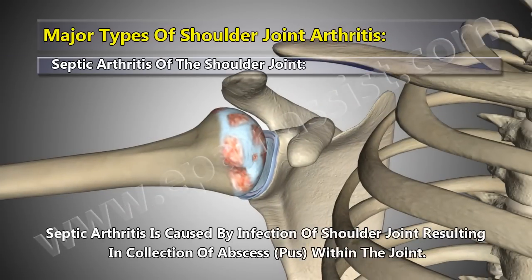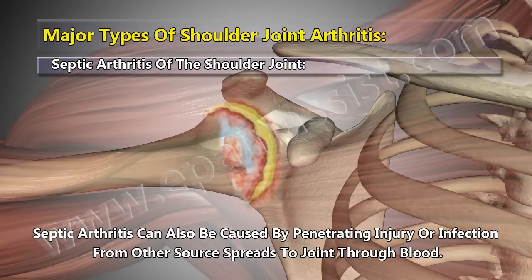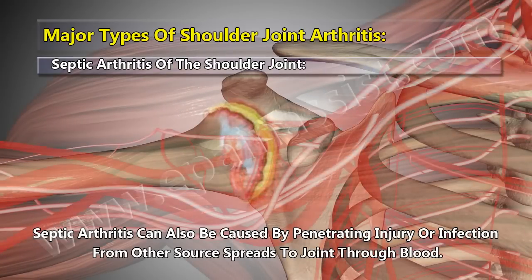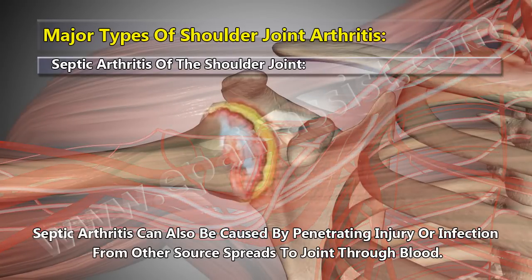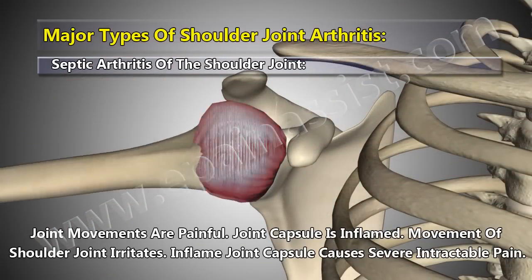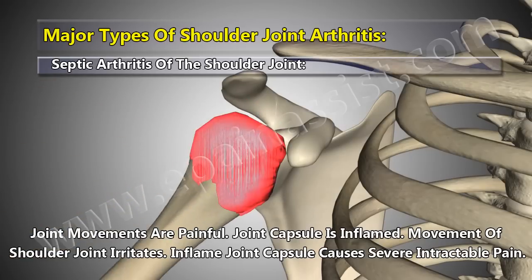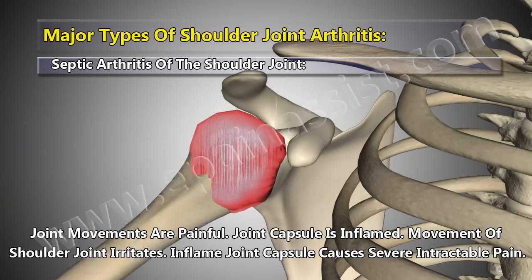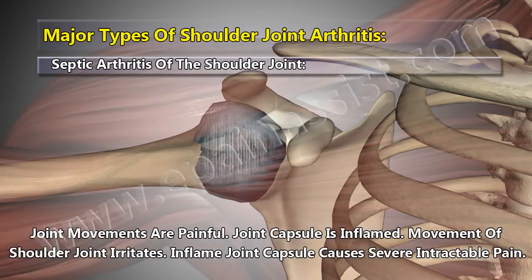Septic arthritis is caused by infection of the shoulder joint, resulting in collection of abscess and pus within the joint. It can also be caused by penetrating injury, or infection from another source spreading to the joint through the blood. Joint movements are painful, the joint capsule is inflamed, and movement of the shoulder joint causes irritation. The inflamed joint capsule causes severe, intractable pain.